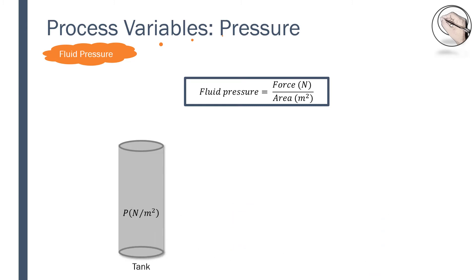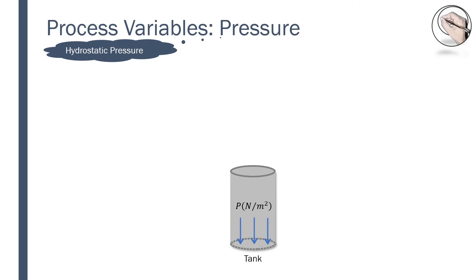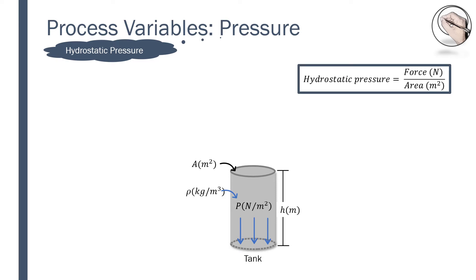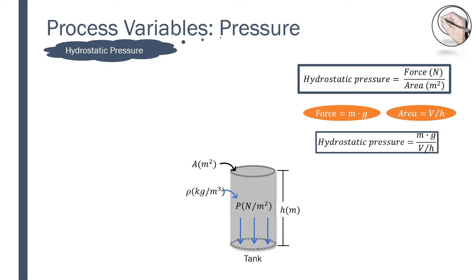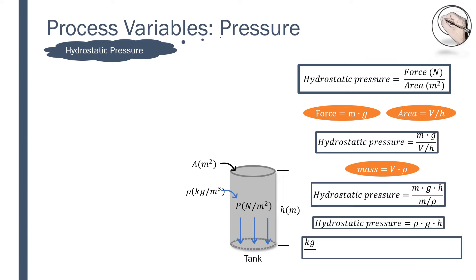Suppose there was no hole in the tank. Looking at the base of the tank, we know that the fluid in the tank is applying pressure on the tank, and it is anchored there by gravity. This pressure is a hydrostatic pressure. This fluid has a certain density, height, and is acting on the area of the tank's base. Similar to fluid pressure, hydrostatic pressure is equal to force over area. This time, the force is defined as the mass of the fluid multiplied by gravitational acceleration. We also know that the area is the same as volume divided by height. Substituting force and area into the original equation, and considering that volume is the same as mass divided by density, we get rho·g·h, where rho is the density of the fluid, g is gravitational acceleration, and h is the height or the head of the fluid. These units result in the pressure unit known as Pascal.